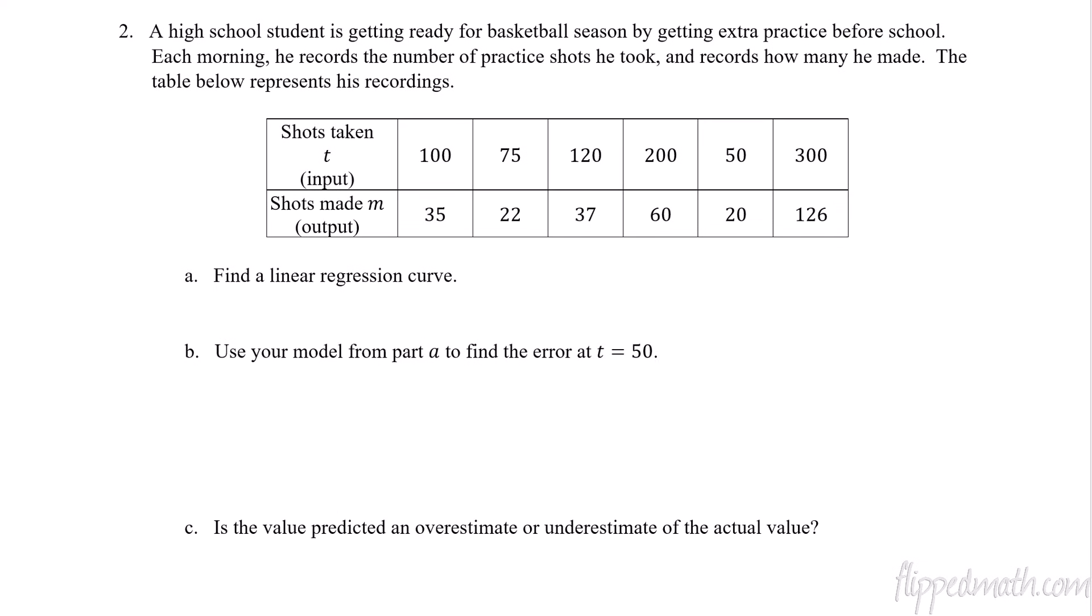So predicted minus actual is what we're going to be focused on for this lesson, trying to figure out the error. So here we have a set of data. We've got somebody who's shooting a bunch of basketball shots. This is how many he makes. And let's just come up with a regression curve. I'm not going to make us do this in the calculator. We've been practicing that all the time. So let's save some time. I've already done that in advance. Here is the regression model. M of t equals 0.417 t minus 8.701.